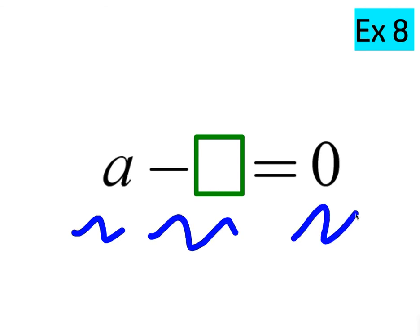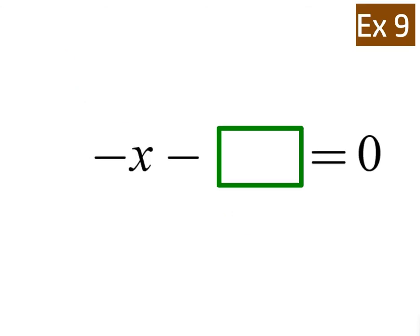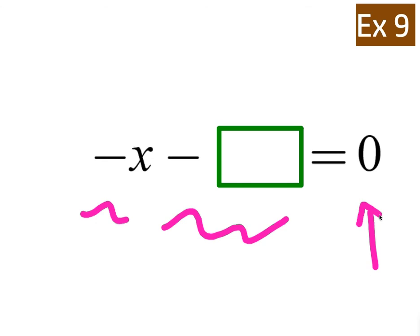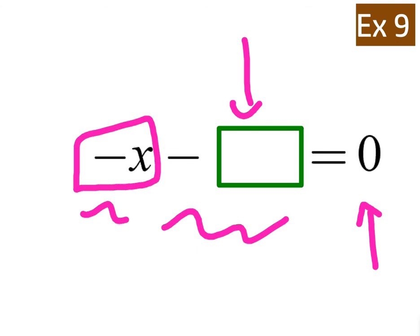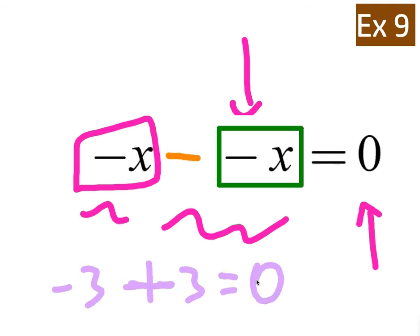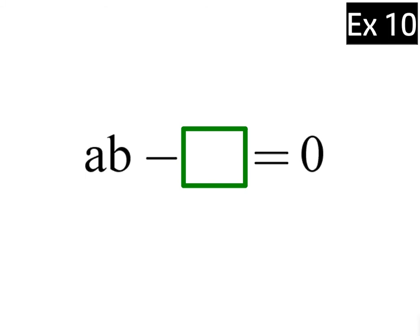Any number minus itself gives you 0. Think of A as any number — any number you choose, subtracting itself gives you 0. If I start with negative x, what number must I subtract to get 0? A common mistake is to put positive x, but you're subtracting itself, which is negative x. For example, negative 3 minus negative 3 is the same as negative 3 plus 3, which gives you 0.